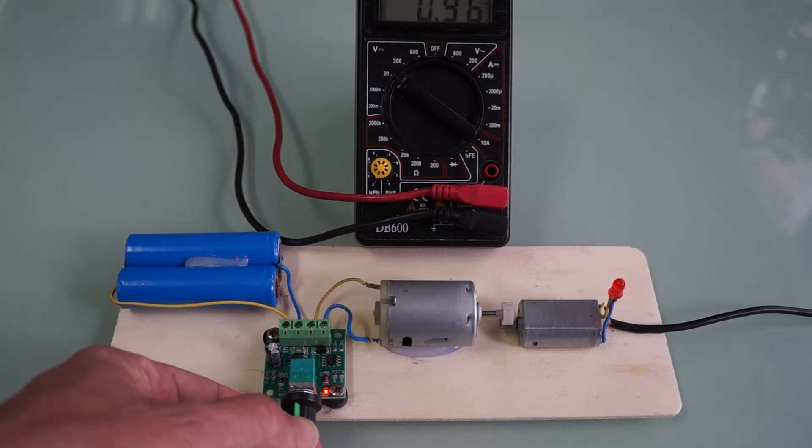As we power the motor and adjust the voltage regulator, the multimeter displays the generated voltage. An increase in voltage indicates a higher rotational speed of the motor.